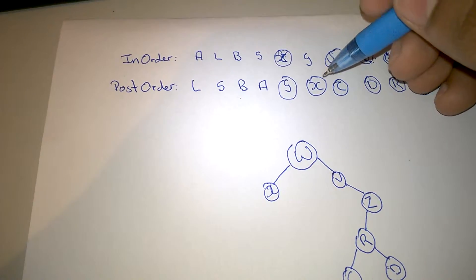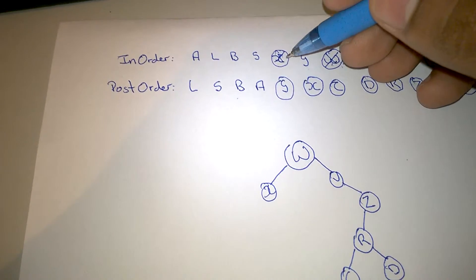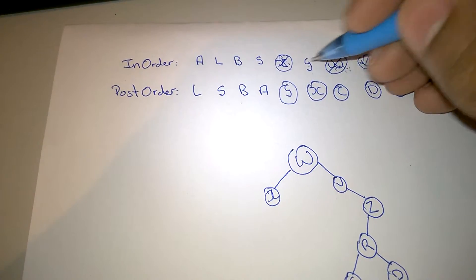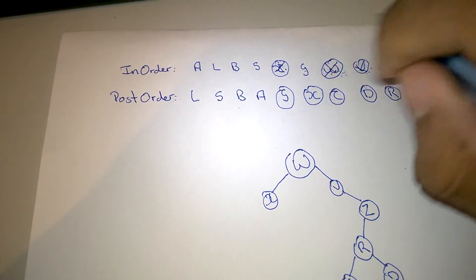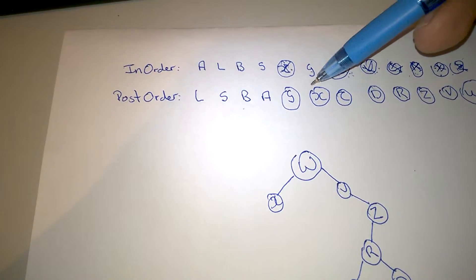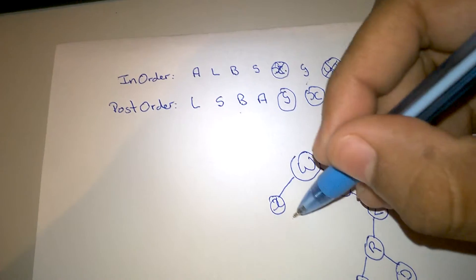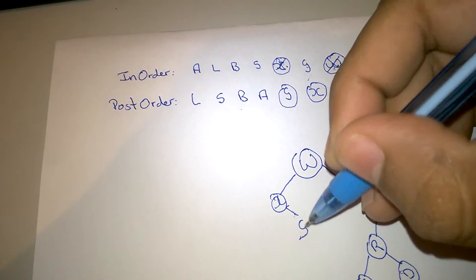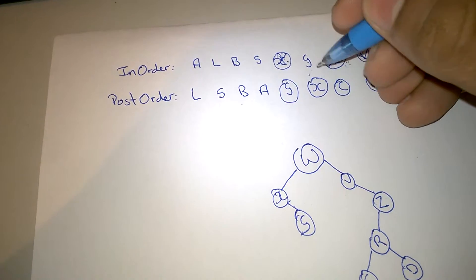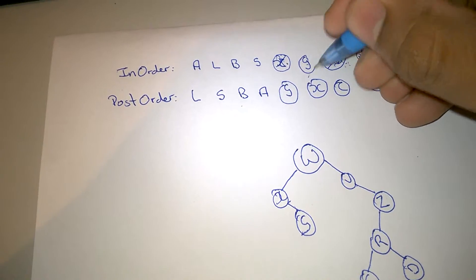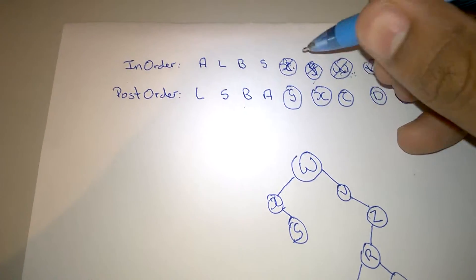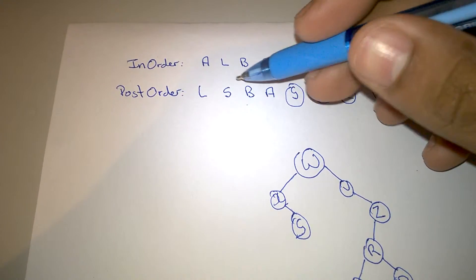So we look to see who G's parent is. G's parent is X. So we put G to the right of X, because in the in-order it is to the right. Now we see X has nothing else to the right and everything else to the left. So everything we're going to put now will be to the left of X.